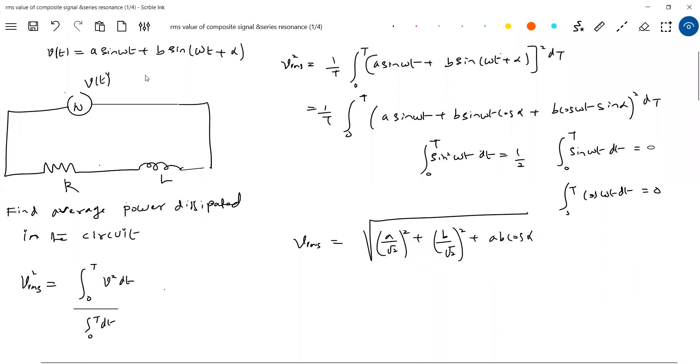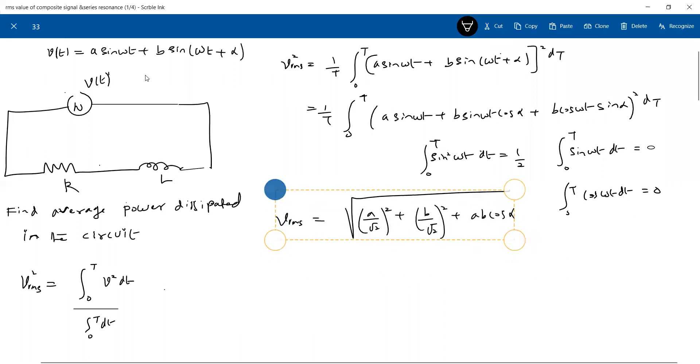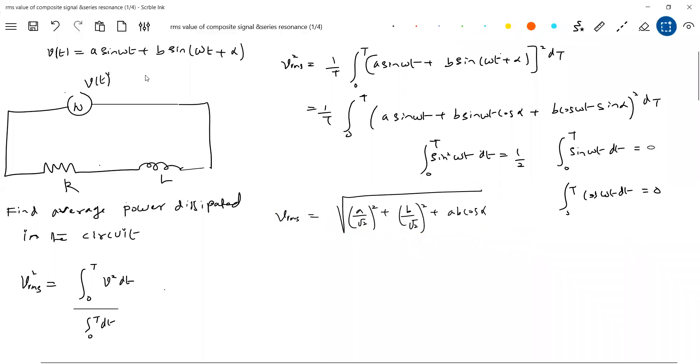So what is the alternative method? Or what is the alternative method? We'll go for phasors. A sin omega t. What is the phase of this? Zero. Magnitude is A. What is the magnitude of second component? B. And what is the phase angle? Alpha.